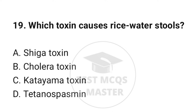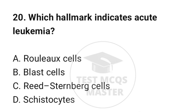Question number 19: Which toxin causes rice water stools? The correct option is B: Cholera toxin. Question number 20: Which hallmark indicates acute leukemia? The correct option is B: Blast cells.